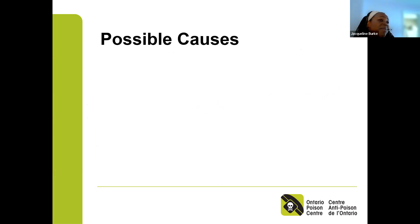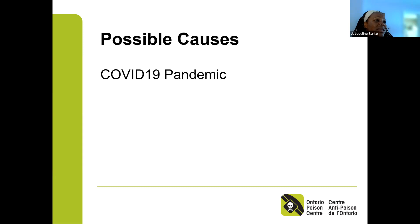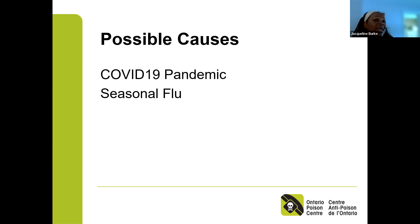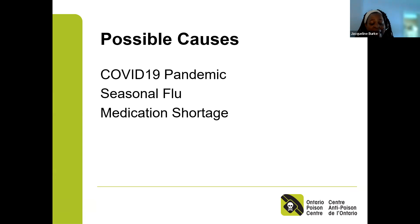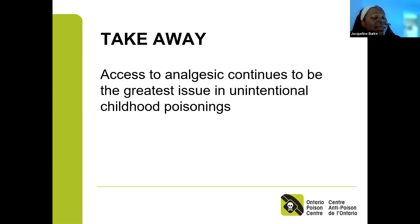Some possible causes for these exposures include the COVID pandemic with excessive cleaning and more cleaning products in the home, seasonal flu and cough-and-cold season with children at school, and the medication shortage at the end of 2022 causing another spike. But overall, our biggest issue seems to be access. The key takeaway for us at the Ontario Poison Centre is that access to analgesics continues to be the greatest issue we see with unintentional childhood poisonings.